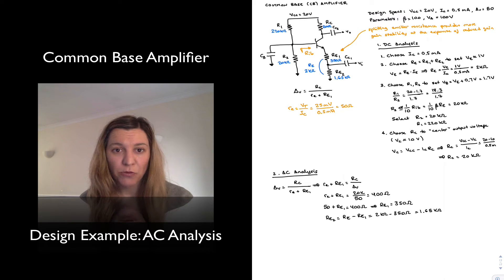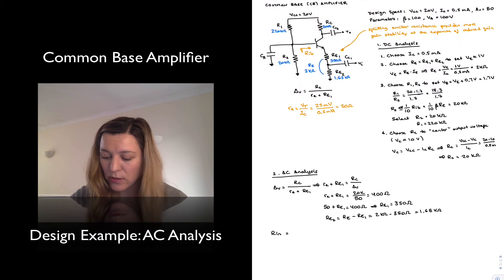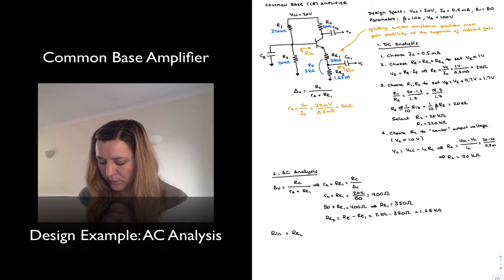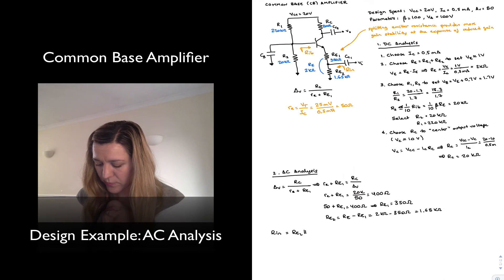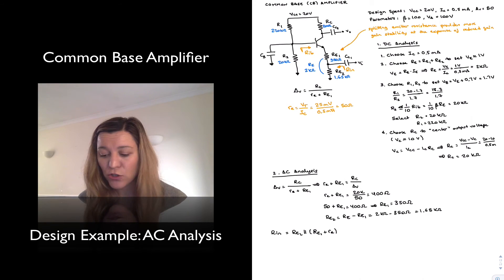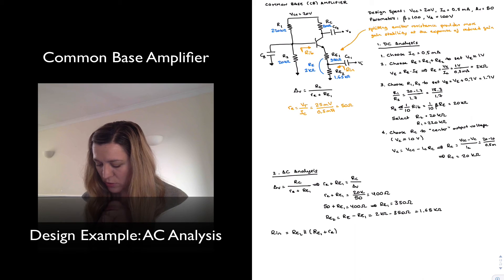Next we'll look at input resistance and output resistance. The input resistance is the resistance looking into the emitter terminal, which equals RE2 in parallel with RE1 in series with little re. It would also be in series with whatever resistance is connected to the base divided by beta, by the inverse reflection rule. But since the base is tied to AC ground through capacitor CB, the resistance from base to ground for AC purposes is just zero.